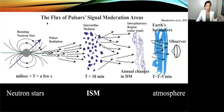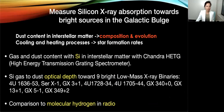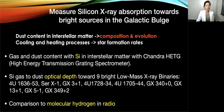When we get data from X-ray sources, for example neutron star binaries, we also want to know what the interstellar medium is contributing to the data. Therefore, we measure the silicon X-ray absorption towards these bright sources in the galactic bulge, because the dust contained in interstellar matter plays an important role in the composition and evolution of the interstellar medium. This can tell us the cooling and heating processes and help us understand star formation. The gas and dust content with silicon in the interstellar medium, measured with the Chandra high-energy transmission grating spectrometer, can tell us a lot of information.